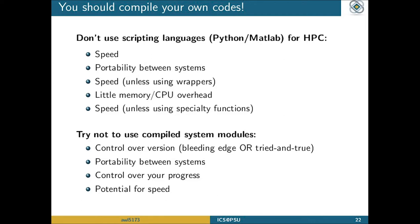I highly suggest that even though we have a lot of compiled system modules available, you compile your own versions. One of the main reasons is that you have full control over the version you use. A lot of people want to use things as soon as they come out, and we can't put things on the system that quickly. If you need access to new releases quickly, you're almost always better off doing this yourself. You can also keep your tried-and-true version running for as long as you want.